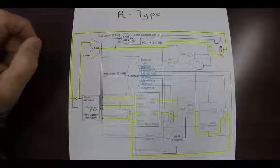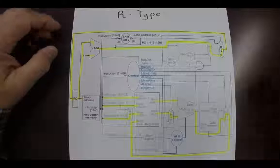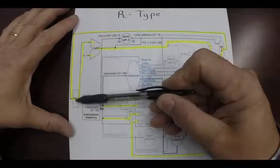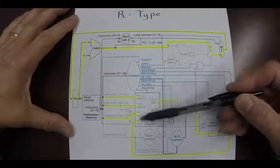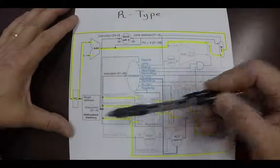What we have here is a very simplified diagram of a single cycle architecture. We have program counter up here, we have the arithmetic logic unit here, we have the register memory and the regular instruction memory right here.